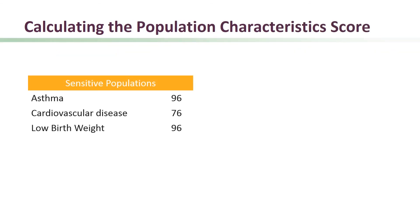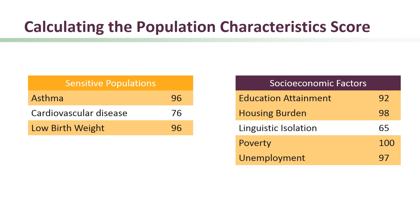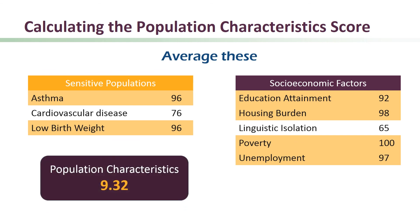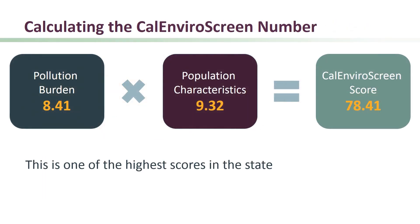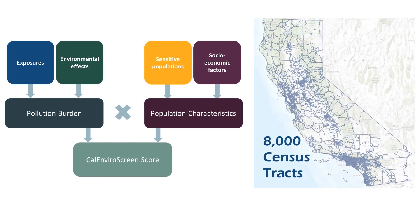On the screen are the sensitive population and socioeconomic factor indicator percentiles. This census tract has many indicators over the 90th percentile, including one of the highest poverty rates in the state with a percentile value of 100. We take the average of the sensitive population percentiles with the average of the socioeconomic factor percentiles, which produces a population characteristics score of 9.32 out of a possible 10. The pollution burden score is multiplied by the population characteristics score for a CalEnviroScreen score of 78.41 — one of the highest scores in the state. This same calculation is performed on every census tract in the state in order to compare all communities to one another based on their relative pollution burden and vulnerability.